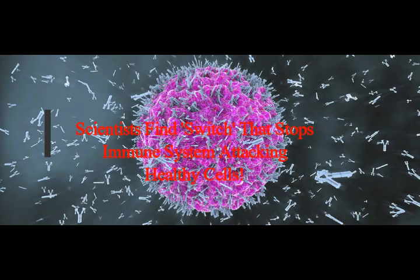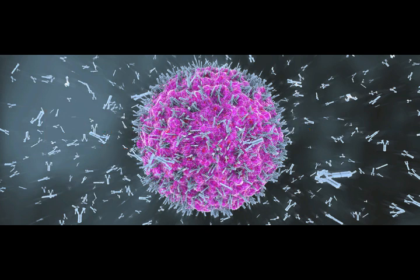Scientists find the switch that stops immune cells from attacking healthy cells. Our immune system is talented at telling the difference between the chemistry of our own body and that of an invading pathogen. When it malfunctions, our body can become host to an intense civil war.